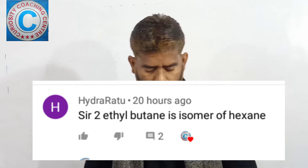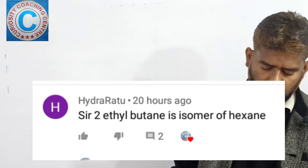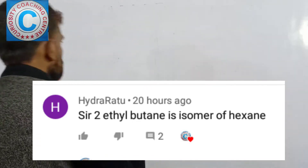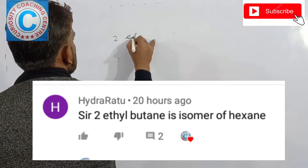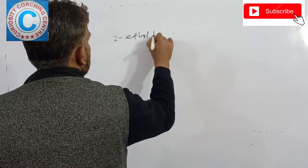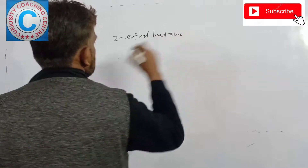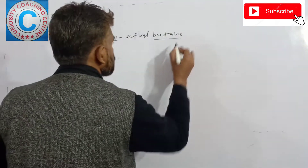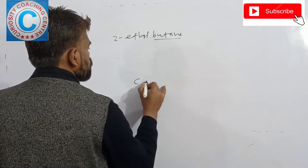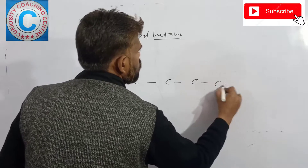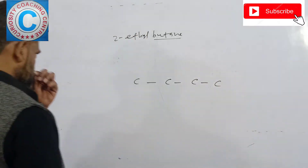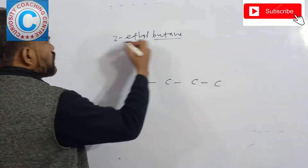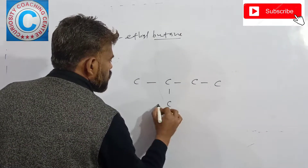2-ethyl-butane — is this an isomer of hexane? Let's see. The main name is butane, so the longest chain is of 4 carbons, and an ethyl group is added to the 2nd carbon.